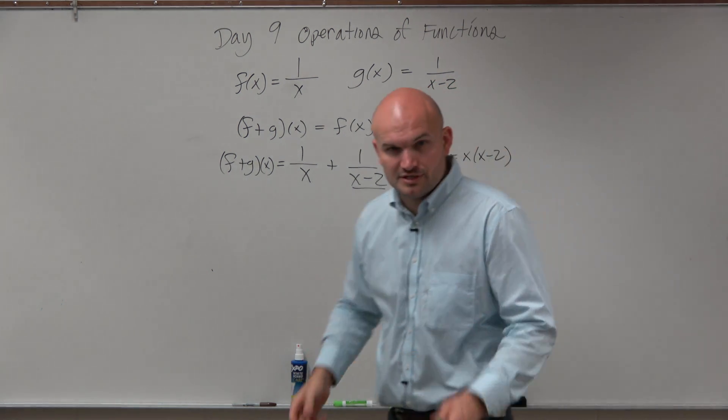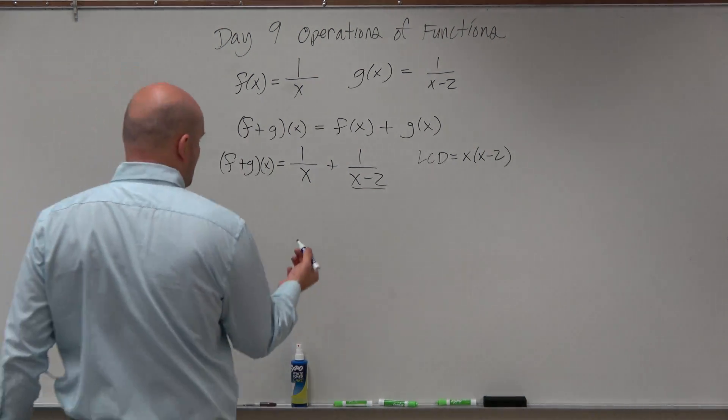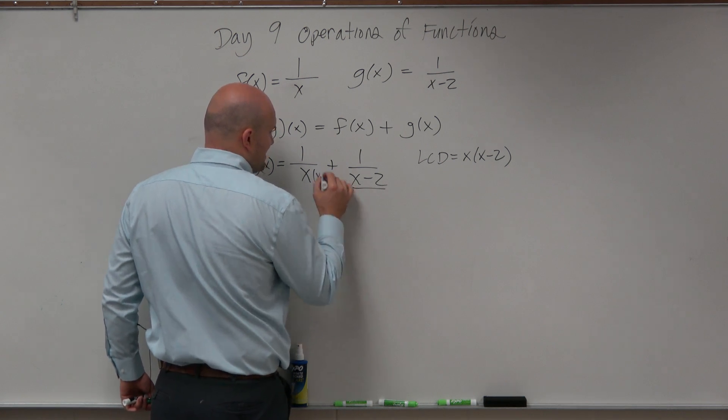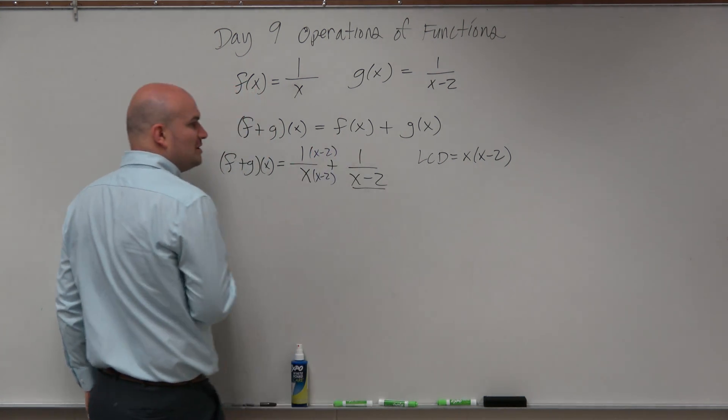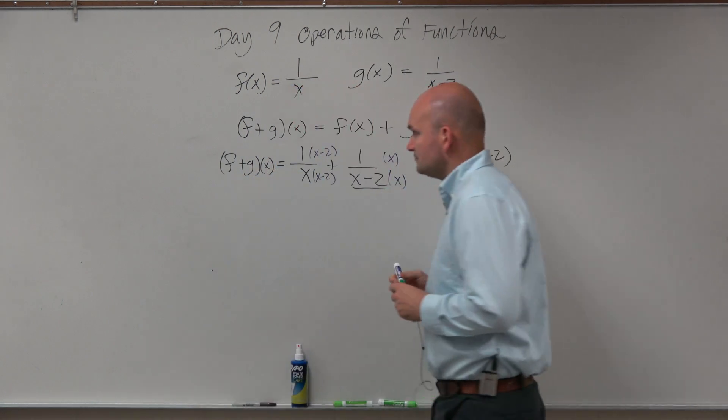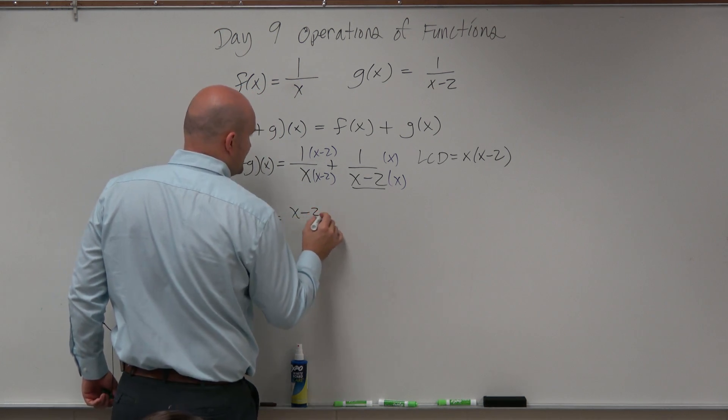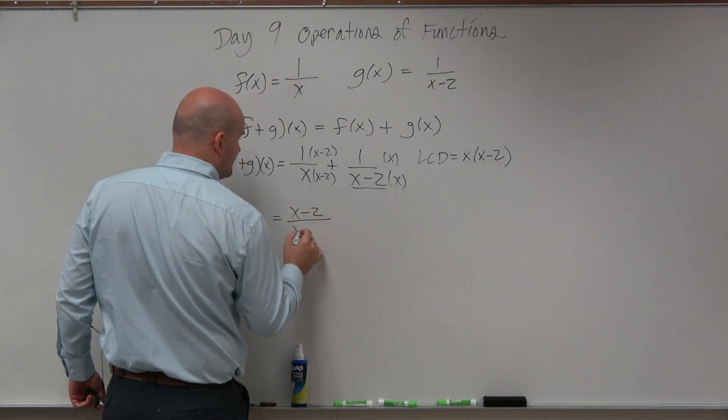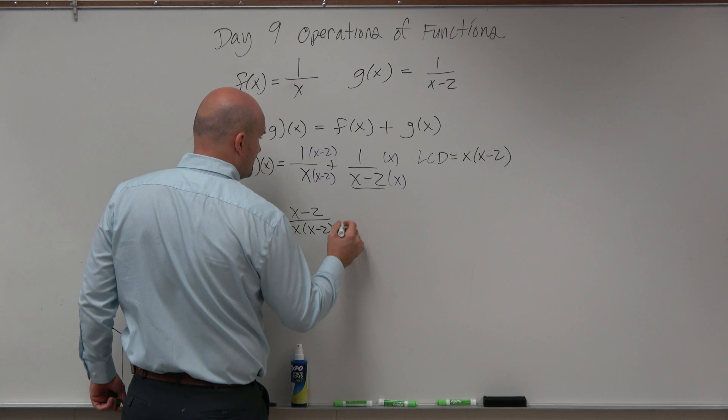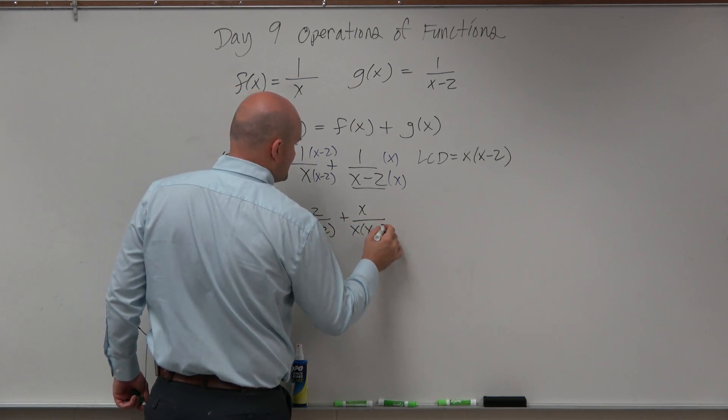Now what I'm simply going to do is multiply the top and the bottom, or the bottom of each equation, to get my LCD. So over here, I'm going to multiply by x minus 2, but whatever you multiply in the denominator, you have to multiply in the numerator. And then here, I'll multiply by x over x. So now, I obtain x minus 2 all over x times x minus 2, plus x over x times x minus 2.